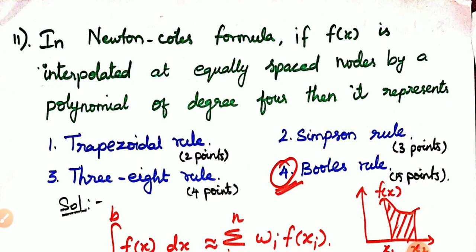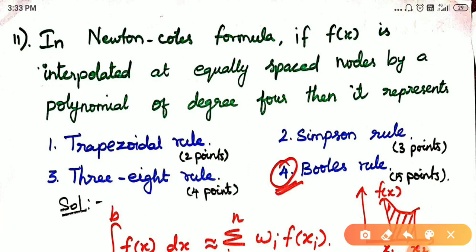There are two tabular columns, and that's why it is a polynomial degree. Here we have equally spaced nodes. If you don't know why it is equally spaced nodes, you can decide the rules of both sides.